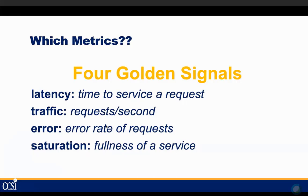So what metrics should we be monitoring? Google defines the four golden signals: latency, traffic, errors, and saturation. Latency is the time to service a request. Traffic is requests per second. Errors are the error rates of requests — not just did the request fail to give a response, but did it give an incorrect response? Saturation is the fullness of the service — how are you scaling over time?